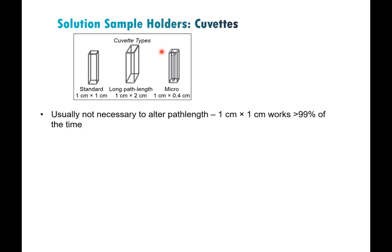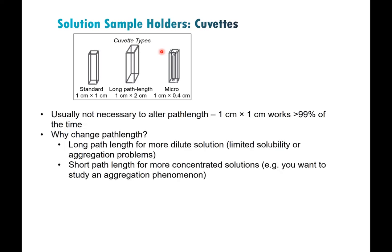Short path length cuvettes are used sometimes as well — not always common in photoluminescence, but for transient absorption measurements where you want a more concentrated solution, you can do that.